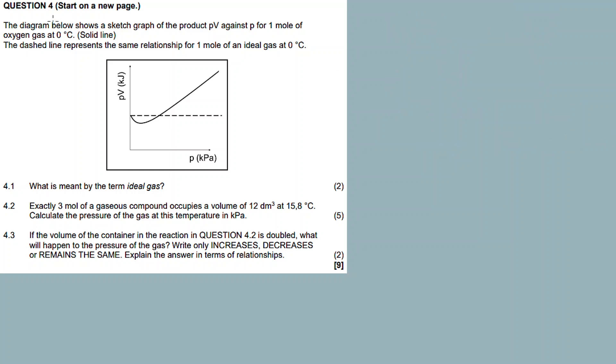Looking at 4.1, that's the fundamental statement. The diagram below shows a sketch graph of the product PV against P for one mole of oxygen gas at zero degrees Celsius. The solid line - the dashed line represents the same relationship for one mole of an ideal gas at zero degrees Celsius. It's the dotted line.